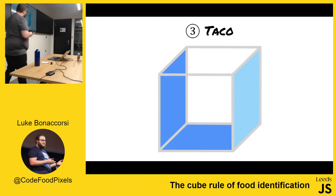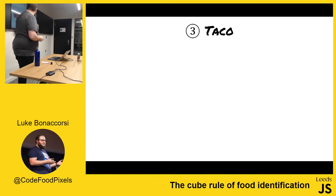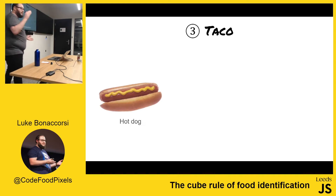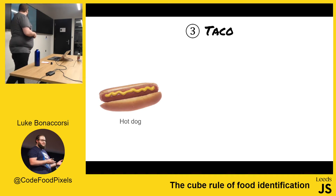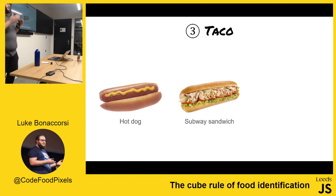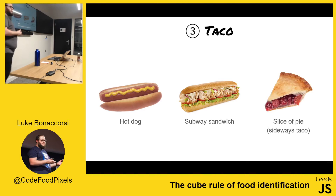Next up, we have tacos — surrounded on three sides. So examples of tacos: we have hot dogs, they aren't a sandwich, they're a taco. Subway sandwiches, because they don't cut all the way through. And a slice of pie, which is a taco on its side.